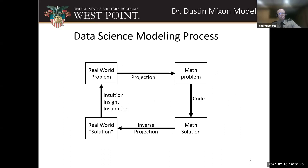Another model I came across in grad school takes a data science approach. My teacher saw data science as a big linear algebra problem — specifically a projection. You take the real world and turn it into a math problem through a projection. We actually do this in ODEs too: when modeling a baseball dropping through the air with drag, we pretend the whole baseball acts at its center of mass, which is a significant projection from thinking about atoms. Once we have the math problem, we find a solution and do an inverse projection, giving us a real-world solution and an idea of where to go next with the model.